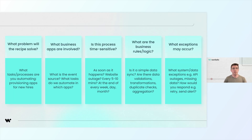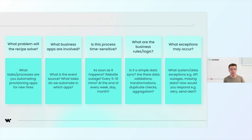So how do we solve these problems with automation? The key is to plan carefully. Before you start building, ask yourself these critical questions. What problem will this recipe solve? We want to automatically escalate high-priority cases for engineering to review and accelerate response and case resolution times. Next, what business apps are involved? In this example, the automation will access data from Salesforce, Jira, and post notifications in Slack.